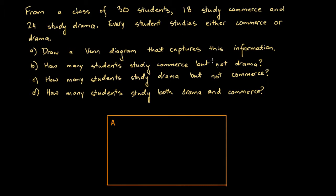Imagine that that were the case. What would be the conclusion? Well, the conclusion would be that we'd have 18 students who study just commerce and 24 students who study just drama. So overall we'd have 18 plus 24, that's 42 students. But we're told that we only have a class of 30 students. So what we must be doing here is counting some students twice.